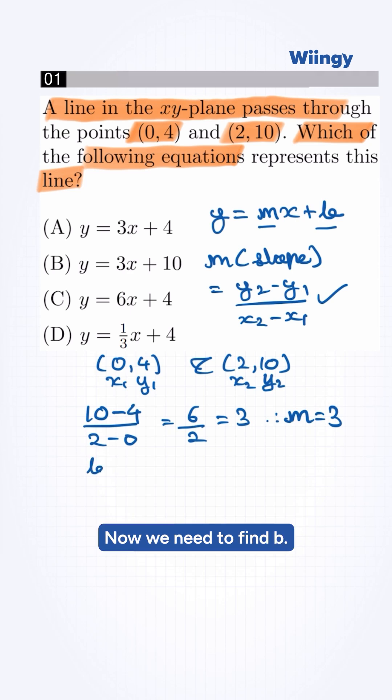Now we need to find b. Look at the points given in the equation. Notice that for 0 and 4 the x value is already 0. Therefore the y value associated with it, 4, automatically becomes y-intercept. So b will be 4.